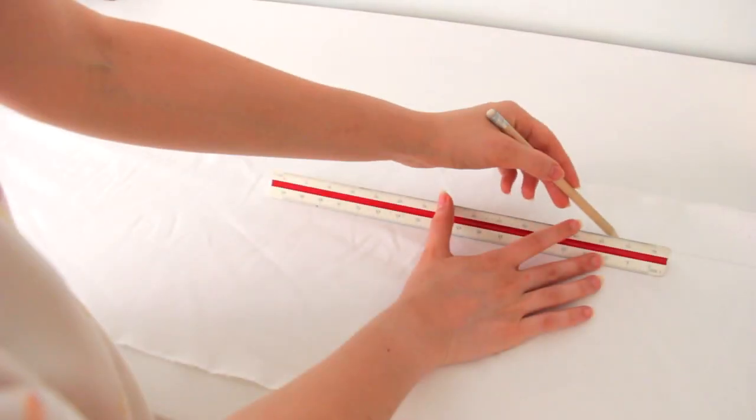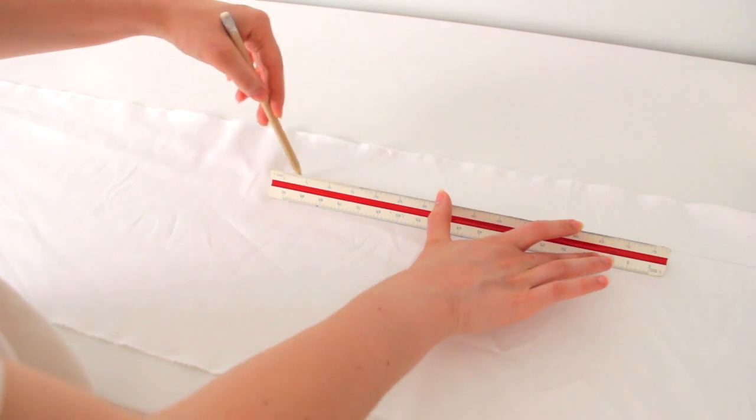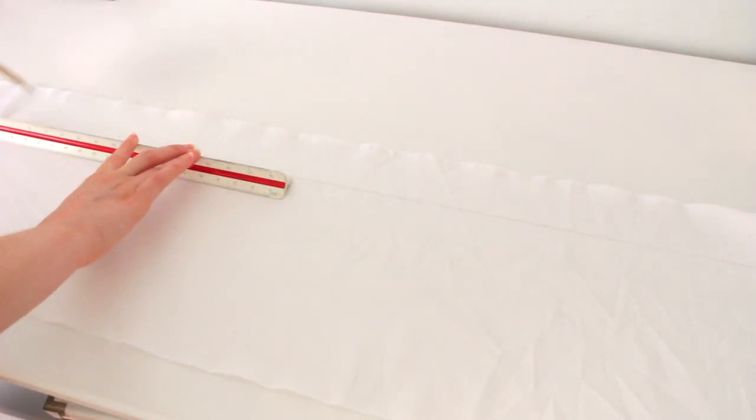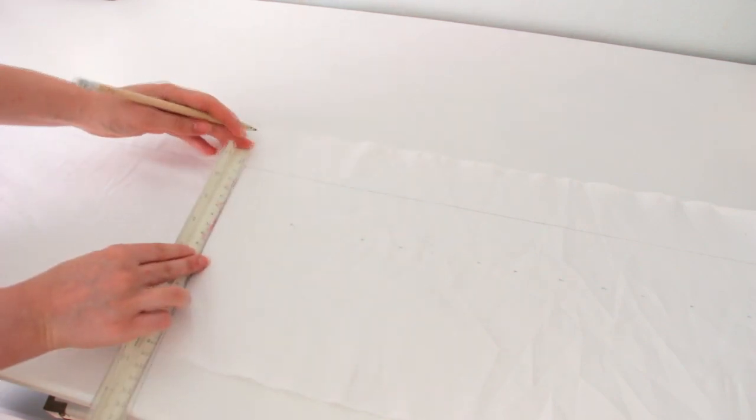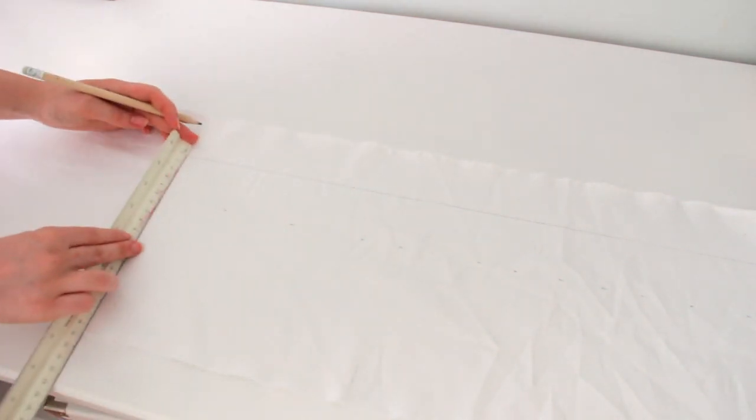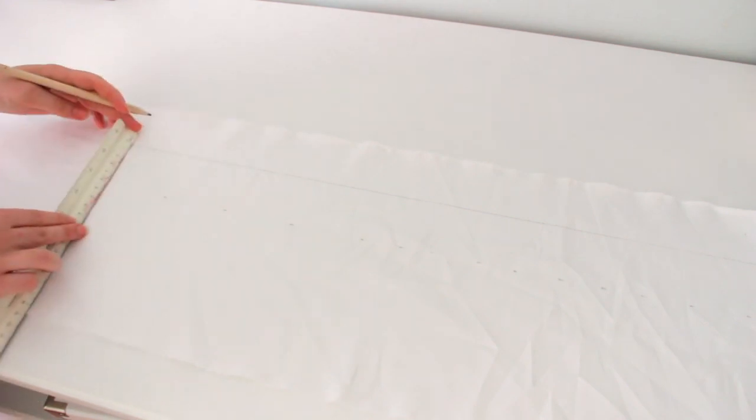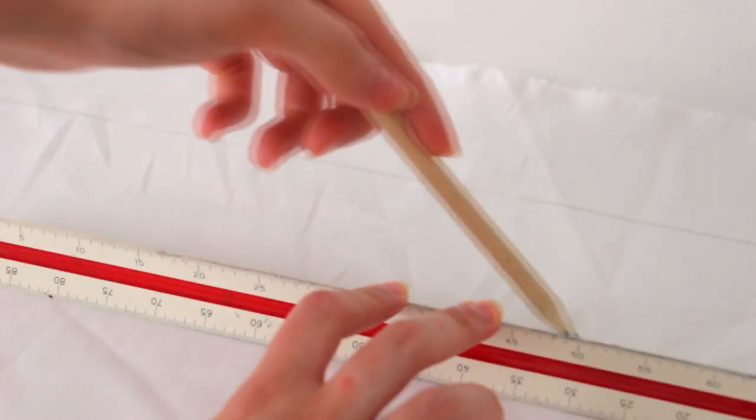Now take the white fabric and draw a line on the wrong side of the fabric. Remember that the measurements will be in the description box. Now make some marks six centimeters from the first line and join the marks to create a straight line.